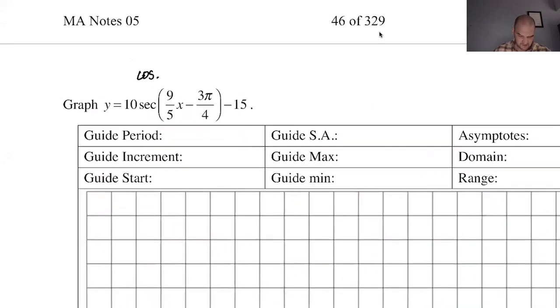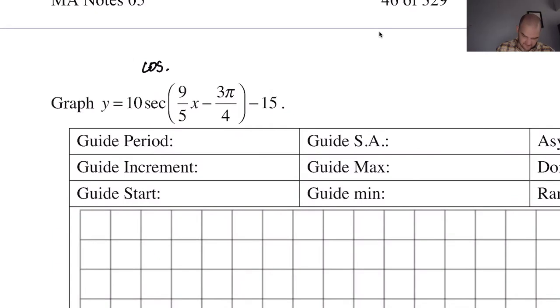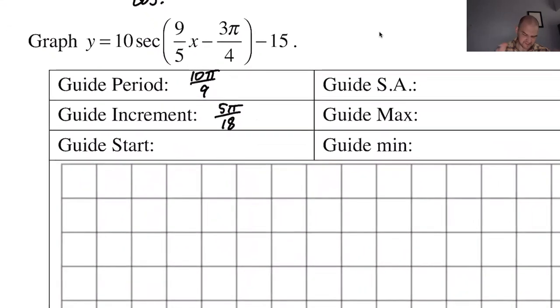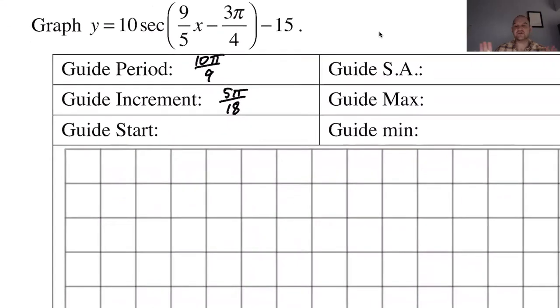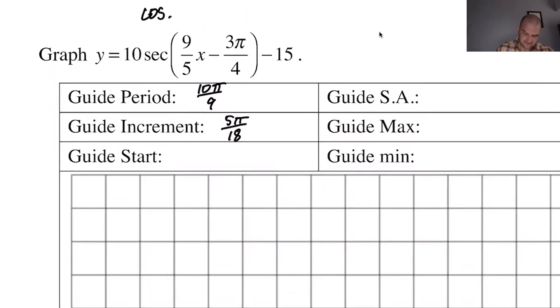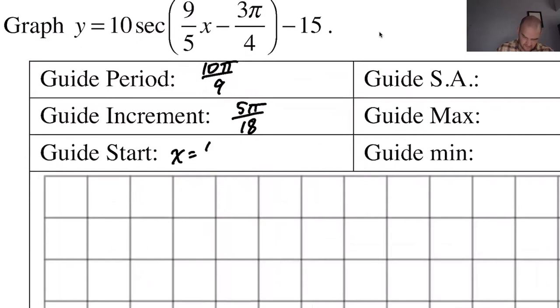So the period is going to be 2π divided by 9/5. So that's going to be 10π over 9, which makes the increment that divided by 4. So 10π over 36, which is 5π over 18. You can tell that this is going to be a pleasant problem. And now the starting point, we're going to take everything in parentheses here, set it equal to 0 and solve. So we add this over and we get positive 3π/4. Then we're going to multiply by 5, so that's positive 15π/4, and divide by 9. That's 15π over 36.